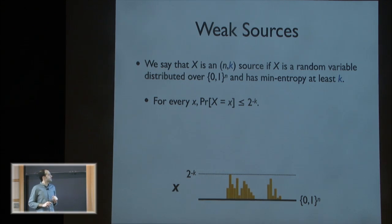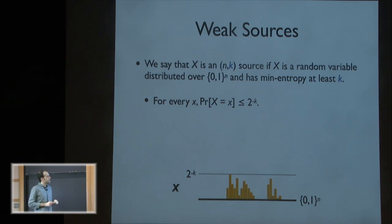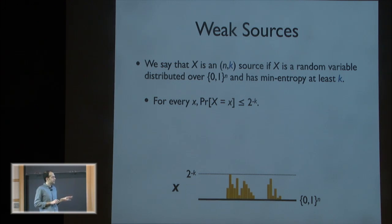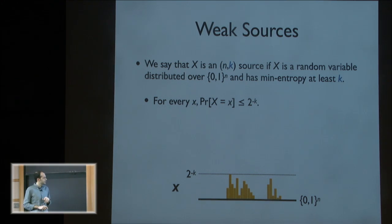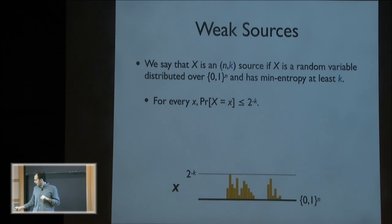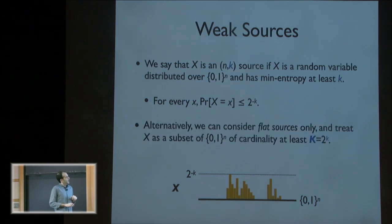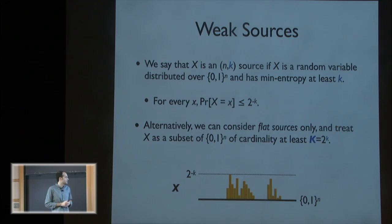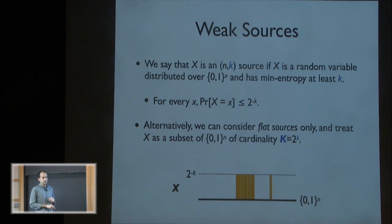What's a weak source? We say X is an (n, k) source if X is a random variable over {0,1}^n and it has min-entropy at least k, meaning that for every x, the probability of seeing x is at most 2^{-k}. When I talked about sets, it's actually equivalent — you can think of the weak source as a flat source where X is a subset of cardinality at least 2^k. It is the support of a distribution.